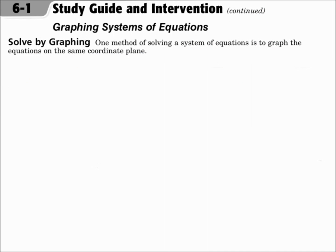You can solve the system as well. One method of solving a system of equations is to graph the equations on the same coordinate plane. When you solve, you're looking for the exact point where they intersect — it'll have an x value and a y value. Your answer will be an ordered pair if there is one solution, no solution if the lines are parallel, or infinitely many solutions if it's an overlapping line.